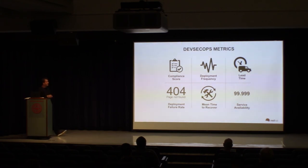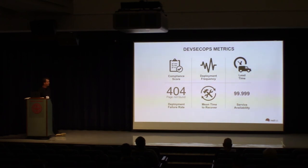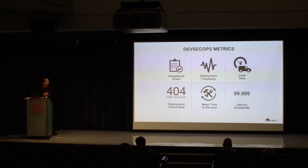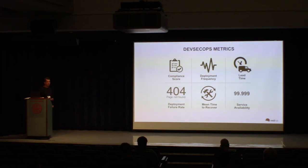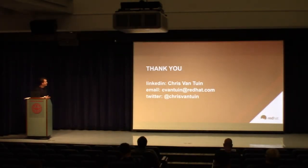DevSecOps metrics, to close it out. Here are some metrics you may want to track to ensure you're successfully tracking toward a successful DevSecOps implementation. One is a compliance score — monitor the scans you're going through with your containers, checking for both vulnerability and security compliance. Deployment frequency — how often are you deploying, and is that improving? What is the lead time to get from development into production? What's the failure rate when you go to production? As well as MTTR — how quickly can you recover when there is an issue in production and get it through your pipeline? And of course, service availability as well. With that, I want to thank you for attending today's session. My name is Chris Vantine — here's my email address, feel free to reach out. I'm also available on LinkedIn. Thank you so much.